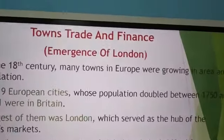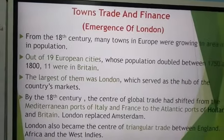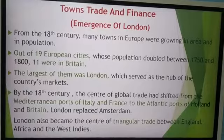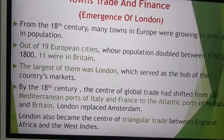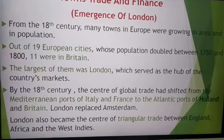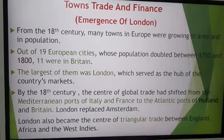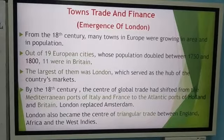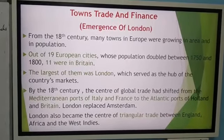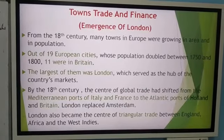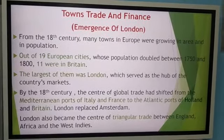Regarding towns and finance: from the 18th century, many towns in Europe were growing in area and population. Out of 19 European cities, 11 were in Britain, and the largest was London — the main hub and market. Trade shifted from the Mediterranean ports of Italy and France to the Atlantic ports of Holland and Britain. London replaced Amsterdam and became the center of primary trade between England, Africa, and West Indies.